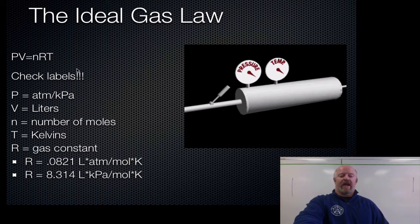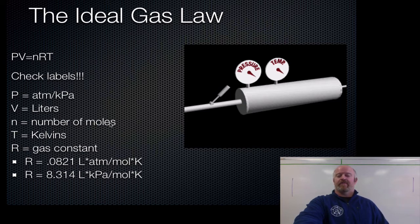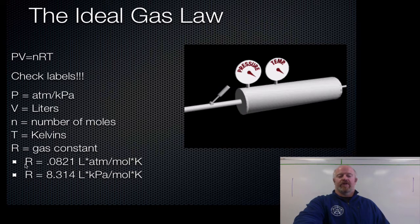A couple of things you have to be aware of: you have to check your labels because you need the exact right units for the ideal gas law. You can't use just any pressure, temperature, or volume. Pressure must be recorded in atmospheres or kilopascals. Volume must be done in liters. N has to be your number of moles. Temperature has to be in Kelvins. Liters, moles, and Kelvins are a must, but pressure is allowed to be two different values because the R gas constant has two different relationships.